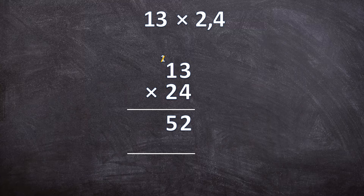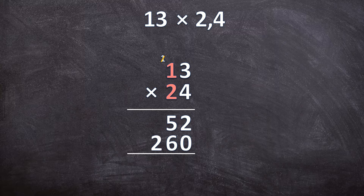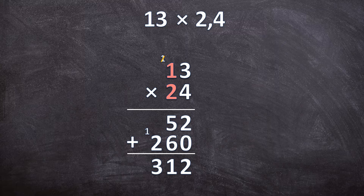Cancel that carried 1 since we've already worked with it. Now multiply with the 20 — because we're multiplying by 20 and not just 2, we add a 0 in the answer line before multiplying with the 2. So 2 times 3 is 6 and 2 times 1 is 2. Now add those two answers together, starting from the right: 2 plus 0 is 2, 5 plus 6 is 11 — write down your 1, carry over your 1 — and 2 plus that 1 is 3.